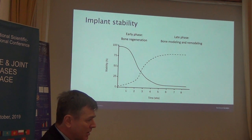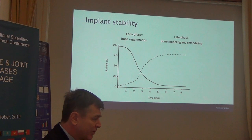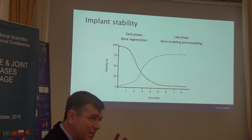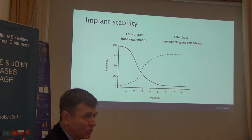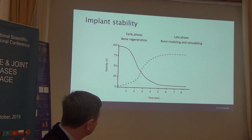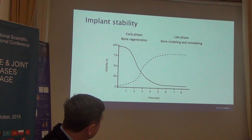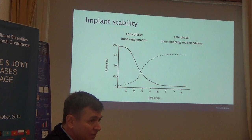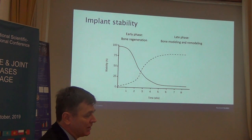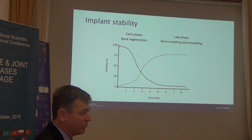What you learn from these pictures is that once you insert an implant into bone, primary stability — the mechanical stability — is important. This mechanical stability is then replaced by so-called biological stability as a consequence of bone regeneration. So the primary mechanical stability decreases, and bone regeneration starts, giving the implant bony support with new bone.